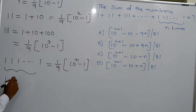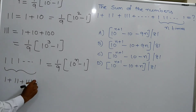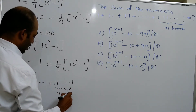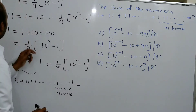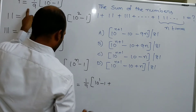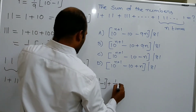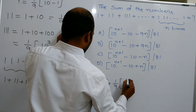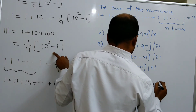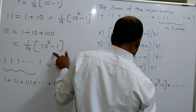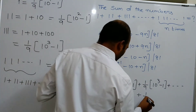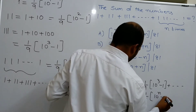Now substituting: 1 plus 11 plus 111 plus and so on plus 111...1 (n times) equals the sum where the first term is 1 by 9 into (10 power 1 minus 1), the second term is 1 by 9 into (10 squared minus 1), the third is 1 by 9 into (10 cubed minus 1), and the last term is 1 by 9 into (10 power n minus 1).